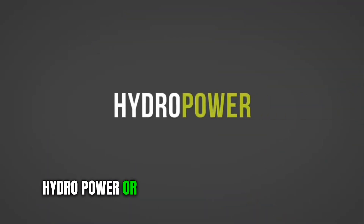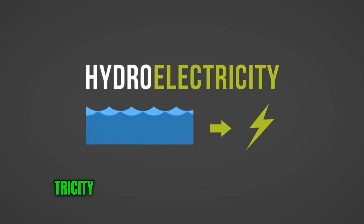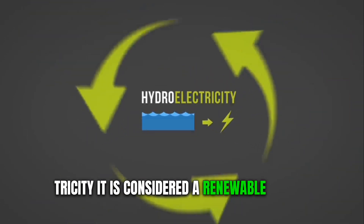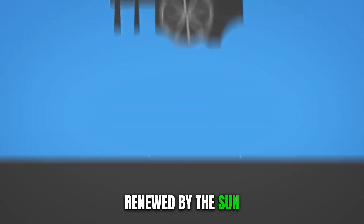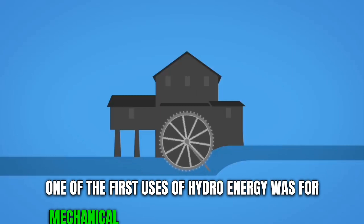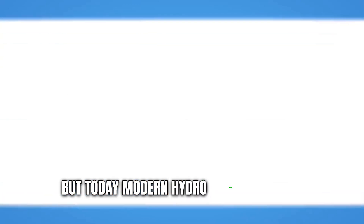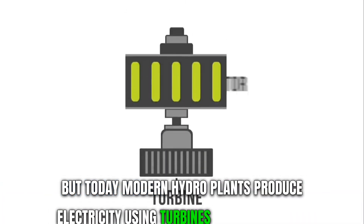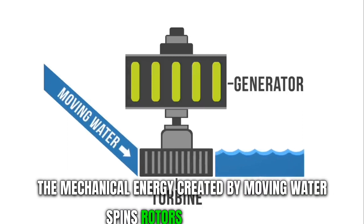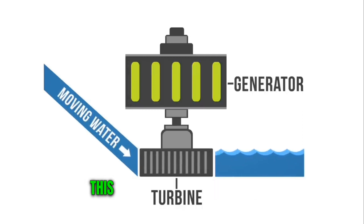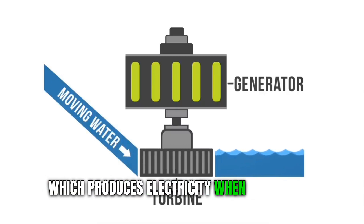Hydropower, or hydroelectricity, refers to the conversion of energy from flowing water into electricity. It is considered a renewable energy source because the water cycle is constantly renewed by the sun. One of the first uses of hydro energy was for mechanical milling, such as grinding grains. But today, modern hydro plants produce electricity using turbines and generators. The mechanical energy created by moving water spins rotors on a turbine, which is connected to an electromagnetic generator that produces electricity when the turbine spins.